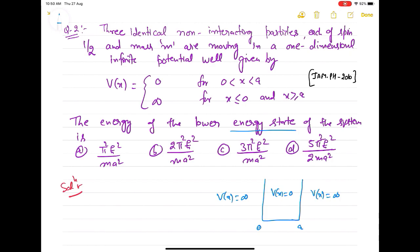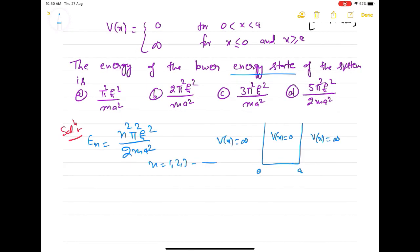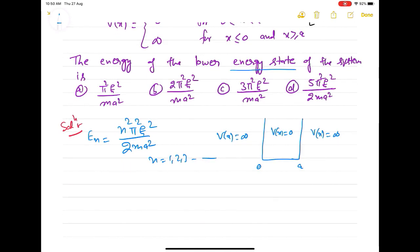It has been given that there are three identical non-interacting particles. For one-dimensional potential box, the energy expression goes as E_n equal to n²π²ℏ²/(2ma²), where A is the dimension of the box and n starts from one, two, three and so on and so forth. The minimum energy for a single particle would have been E₁. But now since there are three identical particles, they have to be arranged in such a fashion that the system has the lowest possible energy.